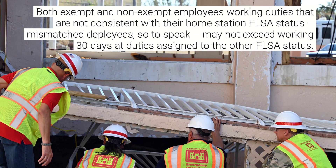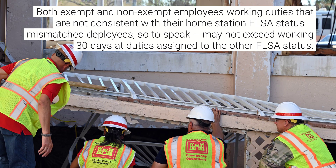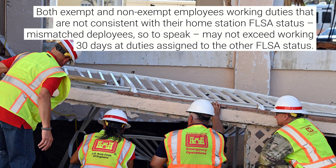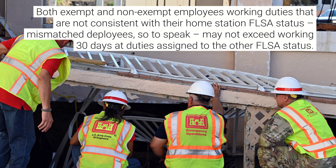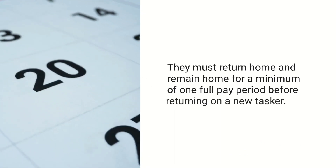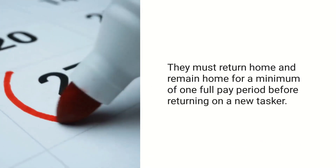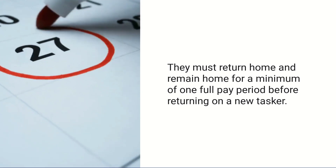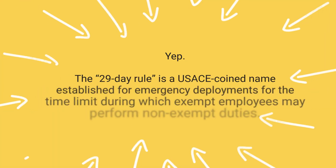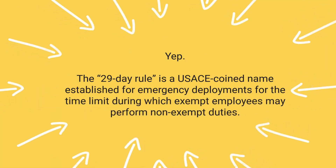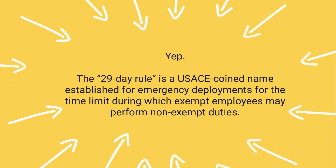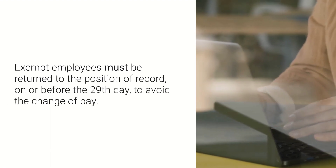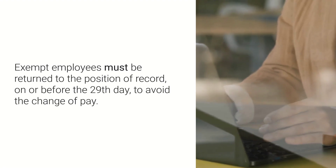Both exempt and non-exempt employees working duties that are not consistent with their home station FLSA status — mismatched deployees, so to speak — may not exceed working 30 days at duties assigned to the other FLSA status. They must return home and remain home for a minimum of one full pay period before returning on a new tasker. Oh, is this that 29-day rule I've heard about? Yep, the 29-day rule is a USACE coined name established for emergency deployments for the time limit during which exempt employees may perform non-exempt duties. Exempt employees must be returned to the position of record on or before the 29th day to avoid the change of pay.